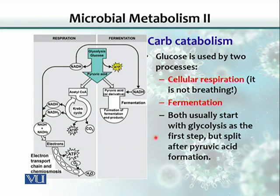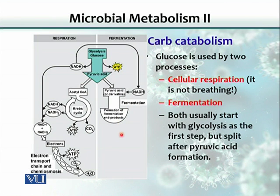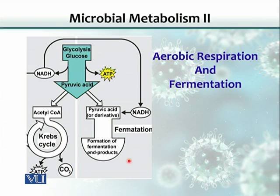Both cellular respiration and fermentation usually start with glycolysis as the first step. But then, at the end, when the substance pyruvic acid is formed, there is a split between the two pathways. Pyruvic acid is channeled into the Krebs cycle, and that forms cellular respiration. If it is channeled through another pathway, it ends up in the fermentation process.